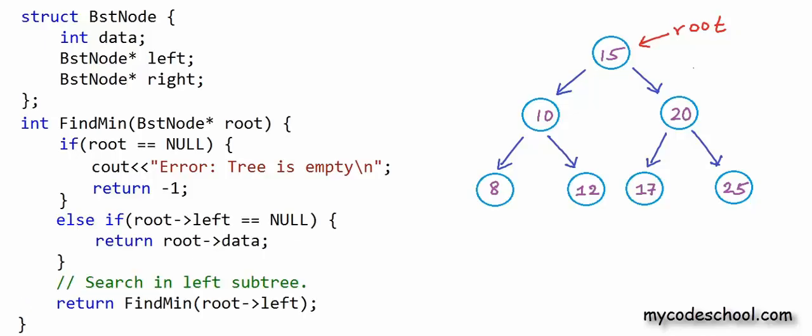Root being null is a corner case. If root is null, that is if the tree is empty, we can throw error. Else if left child of root is null, we can return the data in root. Else if left child is not null, or in other words if the left subtree is not empty, we can reduce the problem to searching minimum in the left subtree. So we are making this recursive call to findMin, passing it address of the left child, passing it address of the root of left subtree. Left child would be the root of left subtree. This second else if is our base condition to exit from recursion.